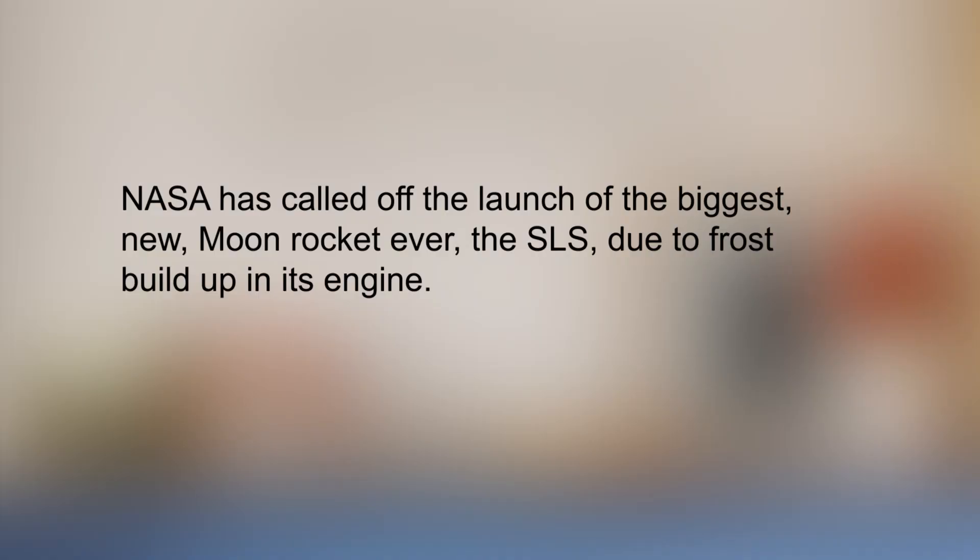Here's another sentence for you to look at. NASA has called off the launch of the biggest new moon rocket ever, the SLS, due to the frost build-up in its engine. What does this sentence tell us? What are the key words? This sentence tells us about the agency, the name of the rocket, its size, and the reason why the launch has been put off. So the main idea or thought here is that the rocket launch has been cancelled.